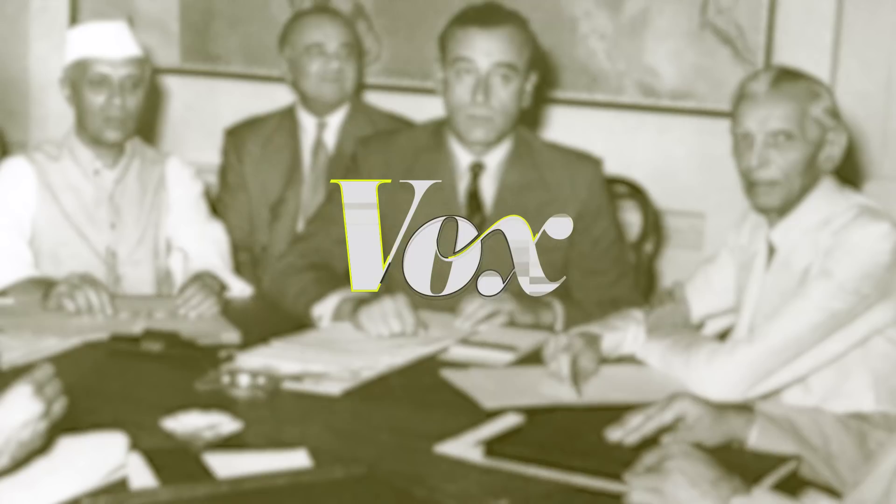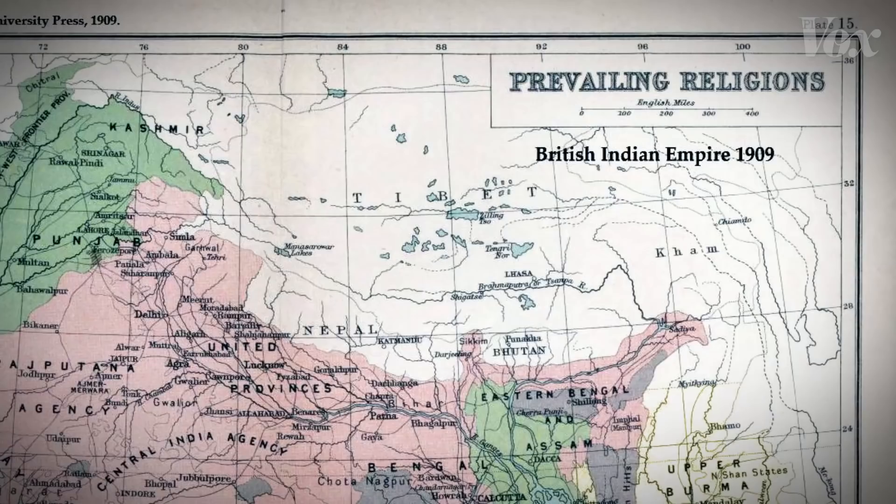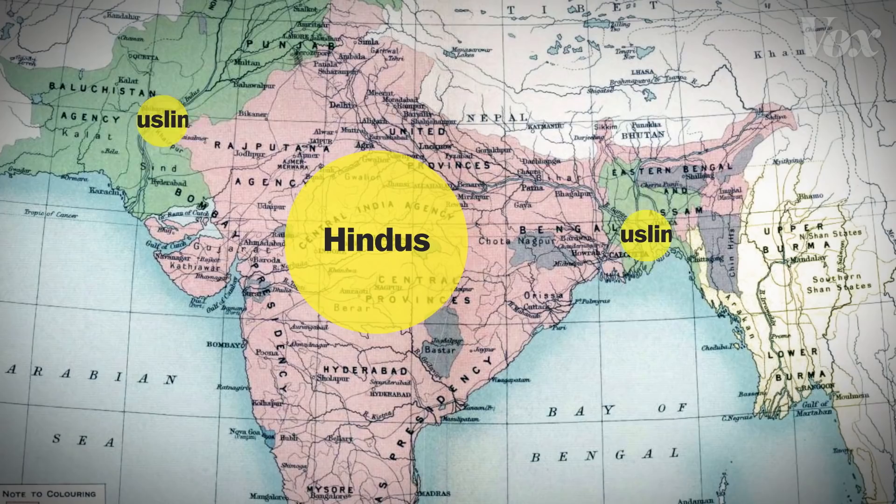A lot of this bitter rivalry can be traced back to when Pakistan and India were still united under British rule. For nearly 200 years, the people of India lived under British rule. At the time, dominant religious groups in the country included Hindus, Muslims, and Sikhs.